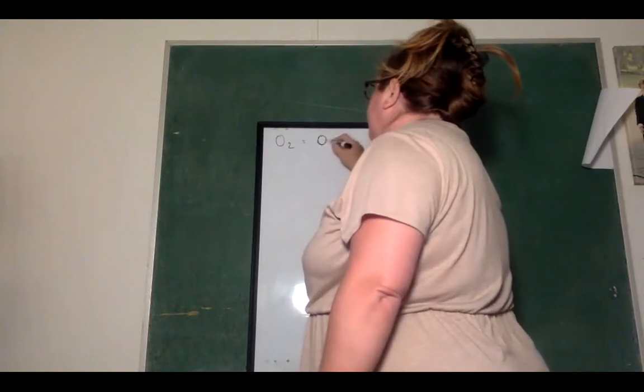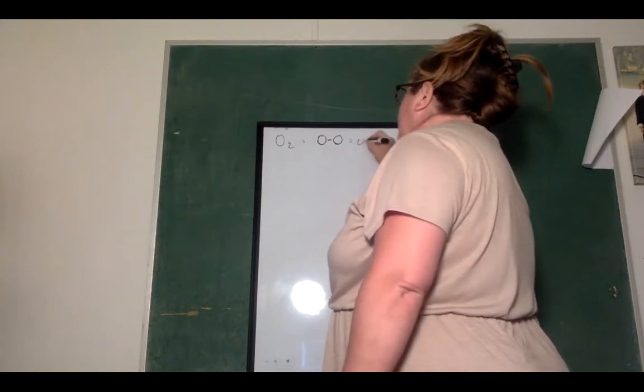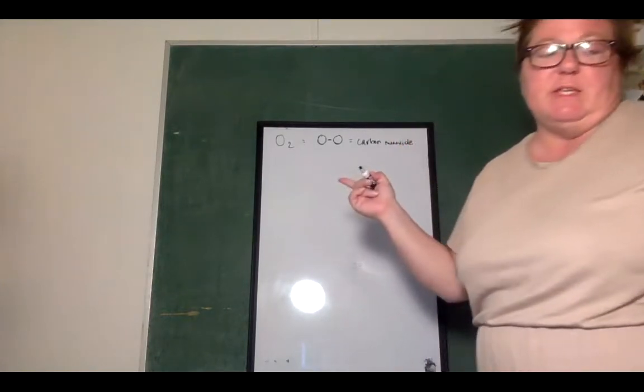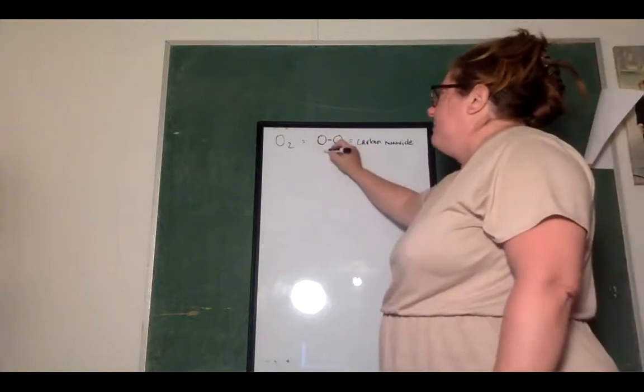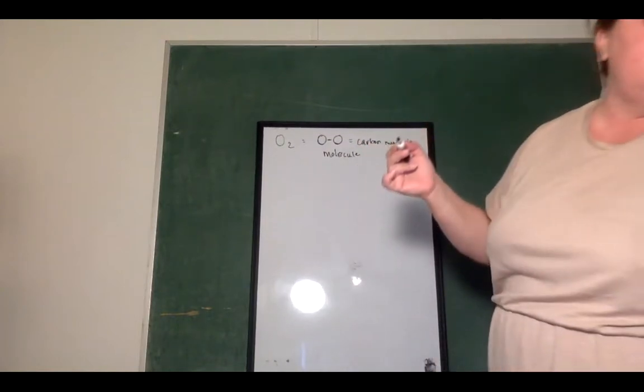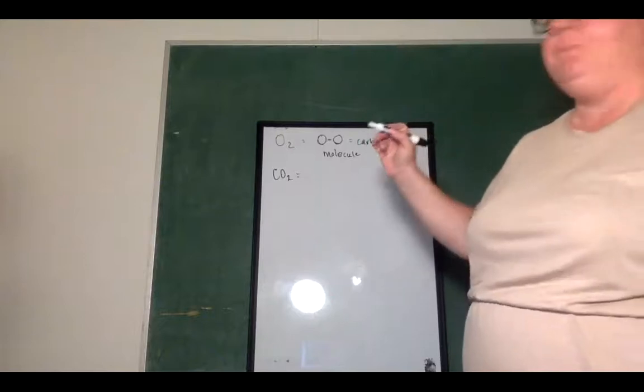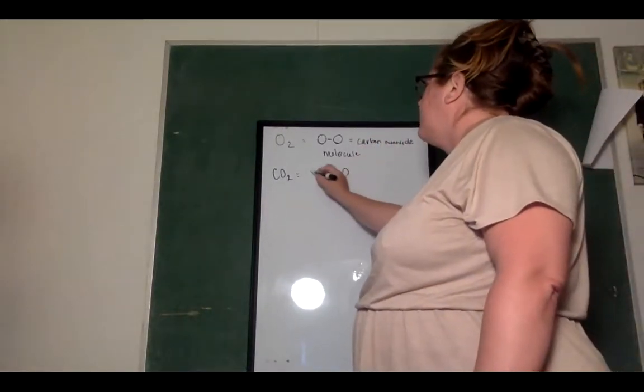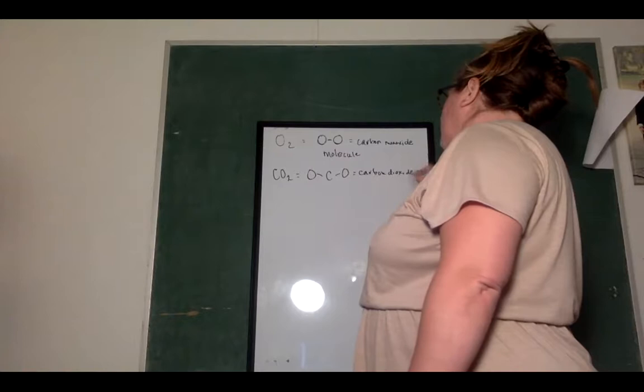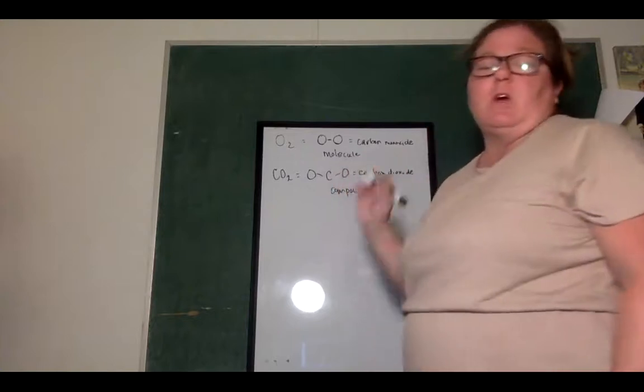So we can have, if you look at page 44, we can have oxygen, O2. So O2, we have O2, and that is an oxygen bonded with another oxygen, two oxygens. And so we call this carbon monoxide. And this would be a molecule because these are the same atoms joined together to make a molecule. Then if you look on the same page, you have CO2, which is carbon and oxygen bonded together to make carbon dioxide. And this is a compound because these are two different elements, carbon and oxygen.